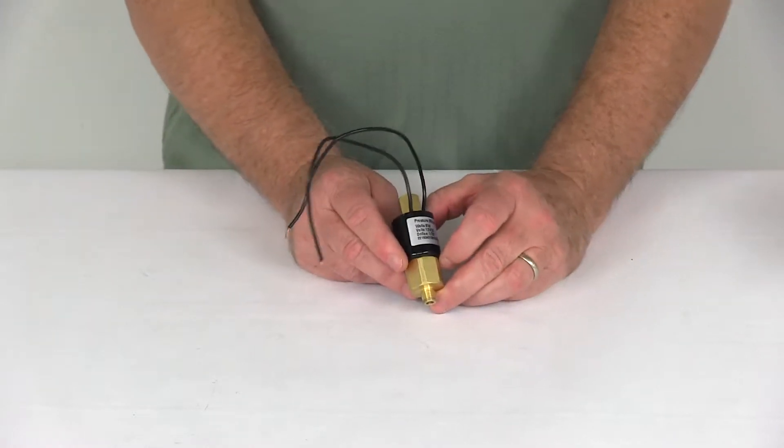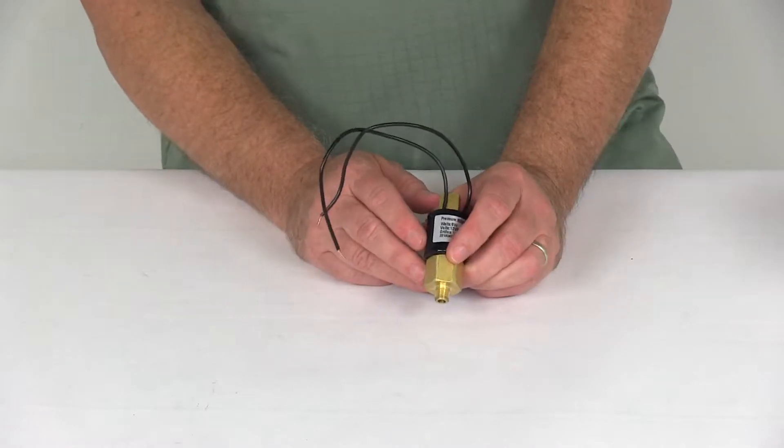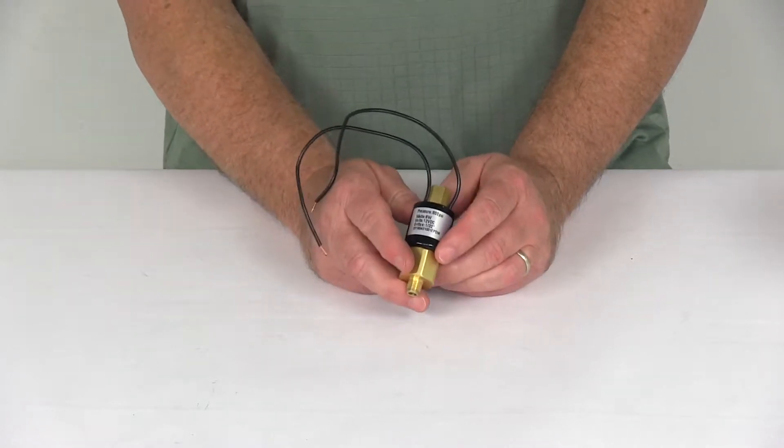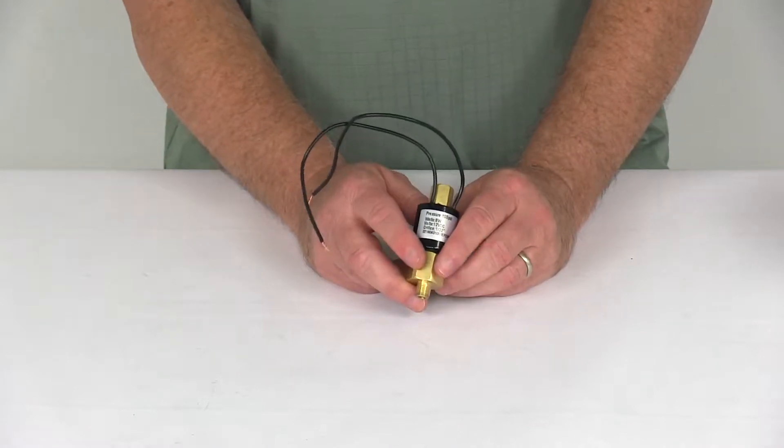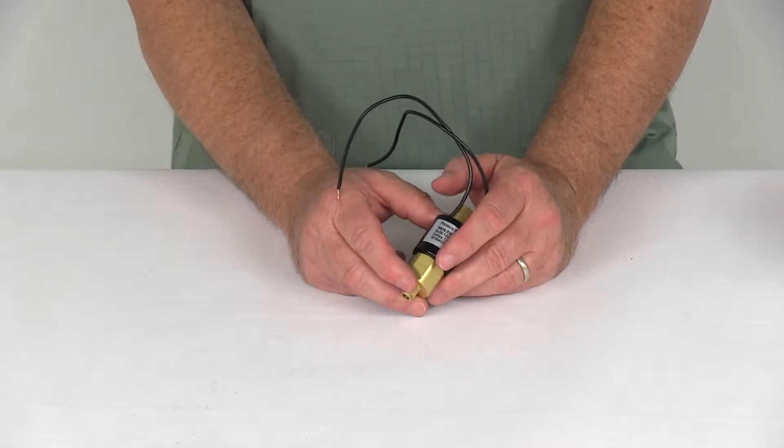Today we're going to take a look at the Titan Replacement Solenoid Valve for Titan Brake Actuators with Reverse Lockouts. This backup solenoid valve will install at the back of your actuator into the brake line connection and wires into your tow vehicle so that the trailer brakes do not activate when you shift your tow vehicle into reverse.